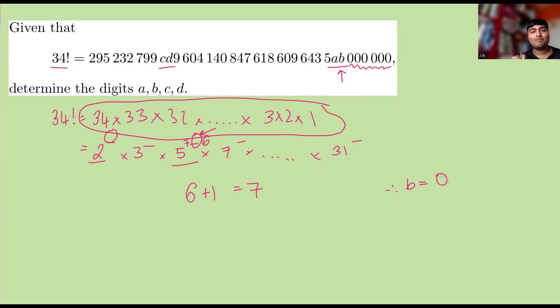Great. So we know that B must be 0. So we're left with A, C, and D. The next digit I'm going to tackle is A.